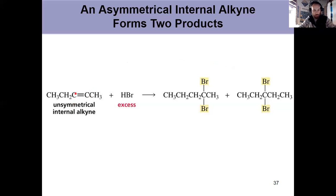So if you're jotting down notes, addition of excess hydrogen halide to an asymmetrical internal alkyne gives you two geminal dihalides, one where it adds to one carbon and one where they add to another carbon.